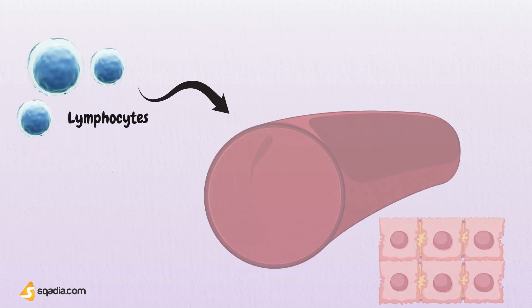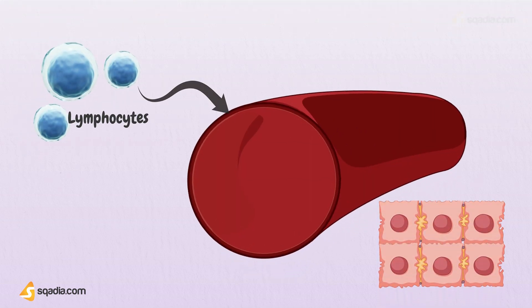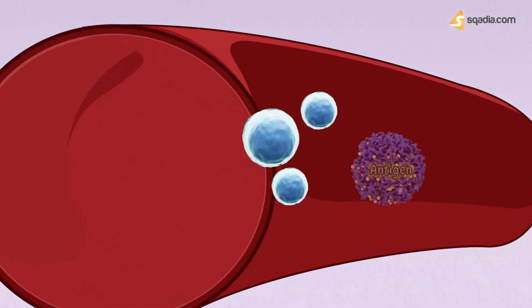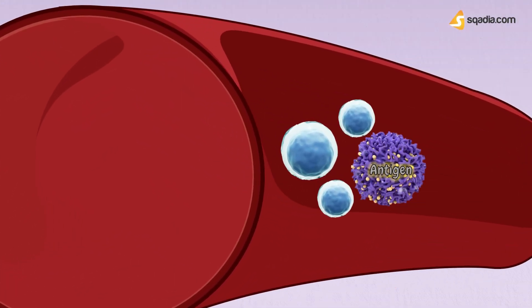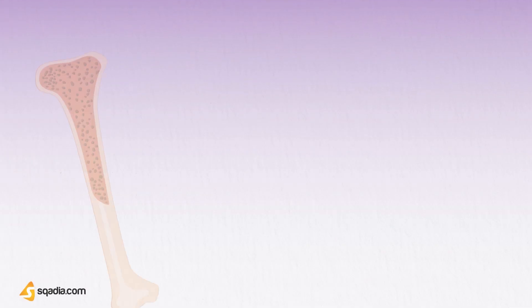Lymphocytes are white blood cells whose job is to recirculate through blood and tissues looking for their antigen — the molecular patterns found on foreign pathogens that differ from those already found in the body.